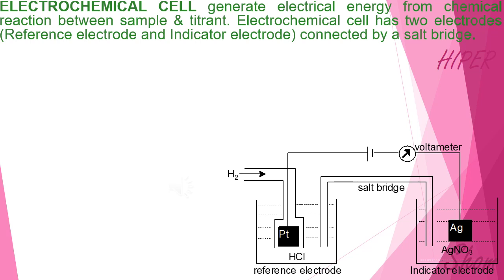In an electrochemical cell, there are two electrodes: one is a reference electrode, and the other is an indicator electrode. These two electrodes are connected by a salt bridge. The salt bridge connects the reference electrode and the indicator electrode.